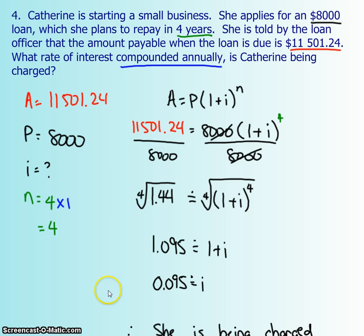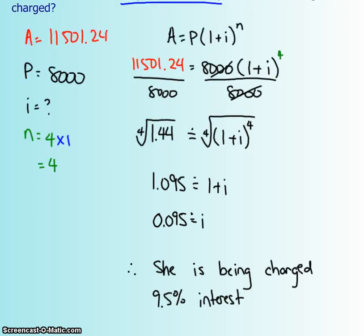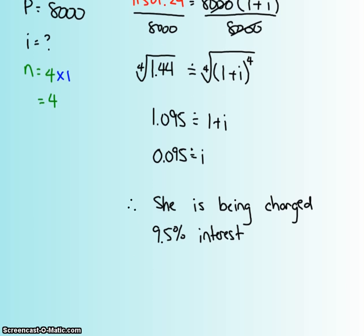This leaves us with i, which we multiply by 100 to get 9.5%. So Catherine was charged 9.5% per annum, compounded annually.